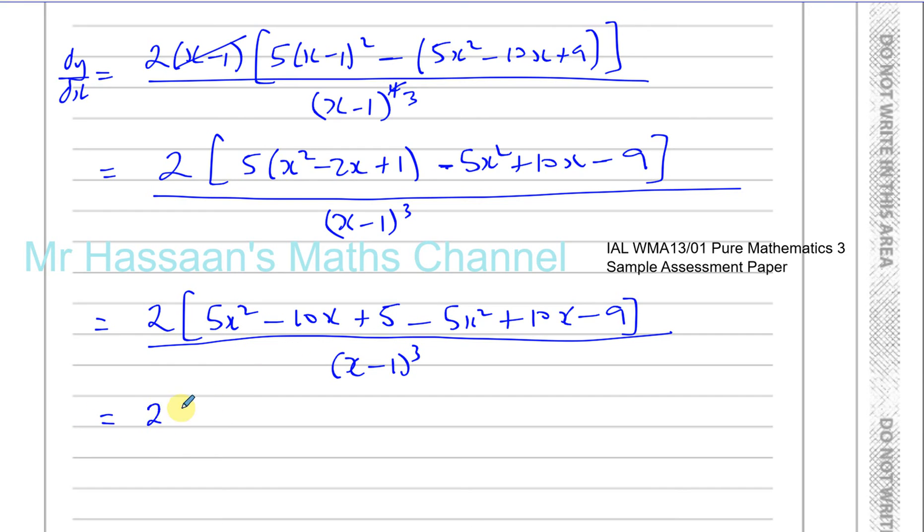You have 2 times, now you've got 5x squared minus 5x squared, which gives you 0x squared, and you've got minus 10x plus 10x, which gives you 0x. And we're left with 5 minus 9, which is minus 4. So you have 2 times minus 4 over x minus 1 cubed, which will give us negative 8 over x minus 1 to the power of 3. And there is our solution. We could even say k equals negative 8. So there we have it, the answer to that question.